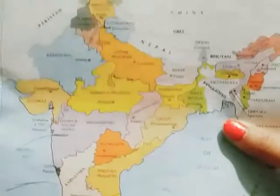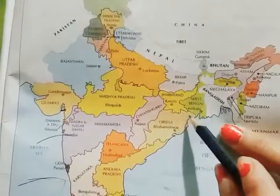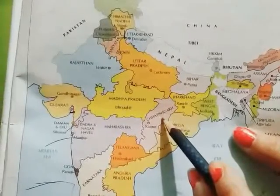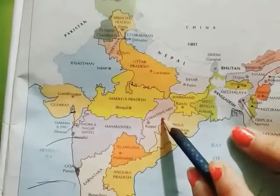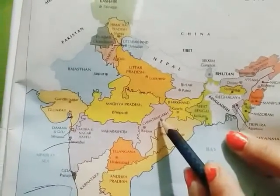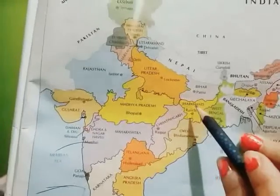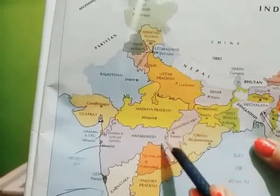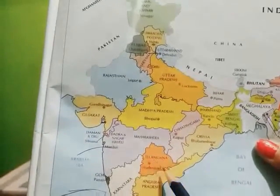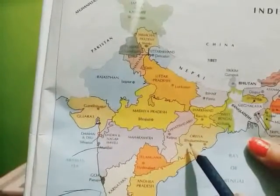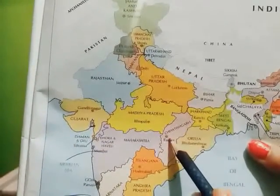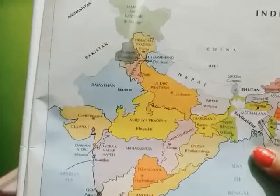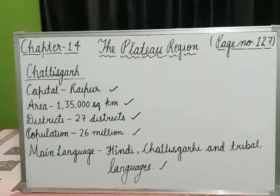See in the map of India — here is Chhattisgarh. It shares its border with the states of Jharkhand, Uttar Pradesh, Madhya Pradesh, Maharashtra, Telangana, and Odisha. Raipur is the capital city. On page number 127,